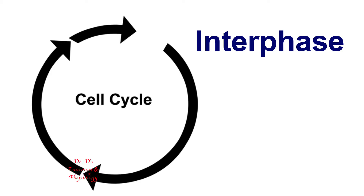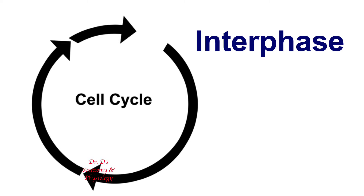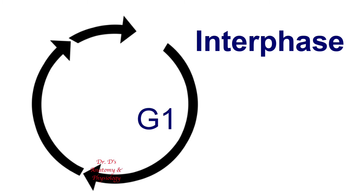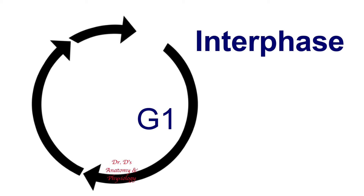This in-between phase is called interphase. Interphase cannot be divided into histologically distinct phases — in other words, something that you can see. However, the activity in the cell between mitosis can be divided into functional phases. First, we have the G1 phase, which you can interpret as the first growth phase. After cell division, the cell needs to grow before its next division; otherwise, it would just get smaller with each division.